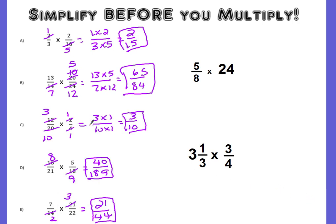Okay, let's see how you did. Simplifying 12 over 20 times 2 fourths: cross-simplifying, I notice that 4 is also a factor of 12, so I divided both by 4. 4 divided by 4 left me 1, and 12 divided by 4 left me 3. I could also simplify vertically by dividing by 2: 2 divided by 2 is 1, and 20 divided by 2 is 10. Multiply numerators: 3 times 1 gives you 3. Multiply denominators: 10 times 1 gives you 10. Your answer is 3 tenths.